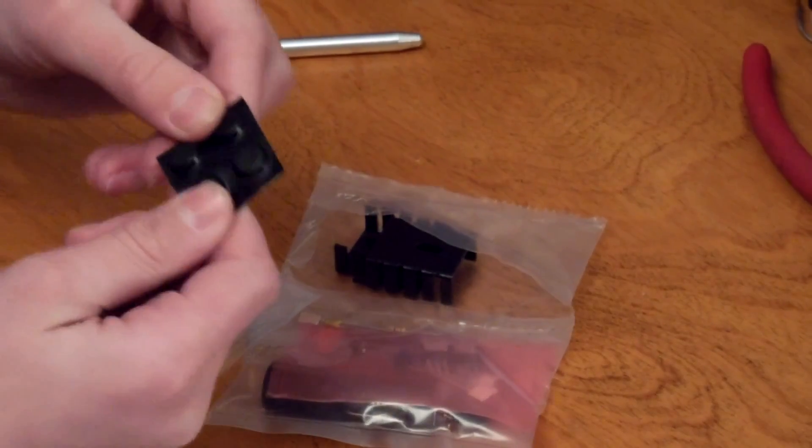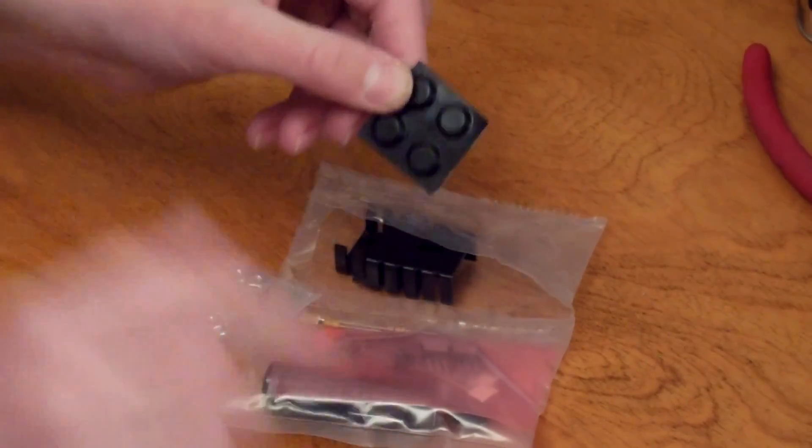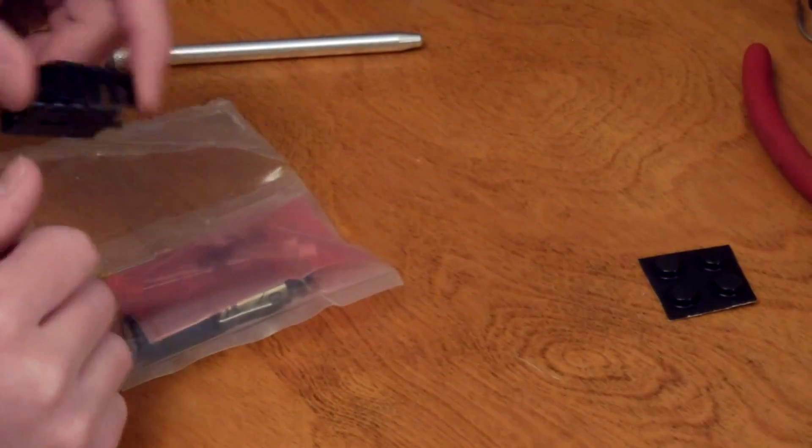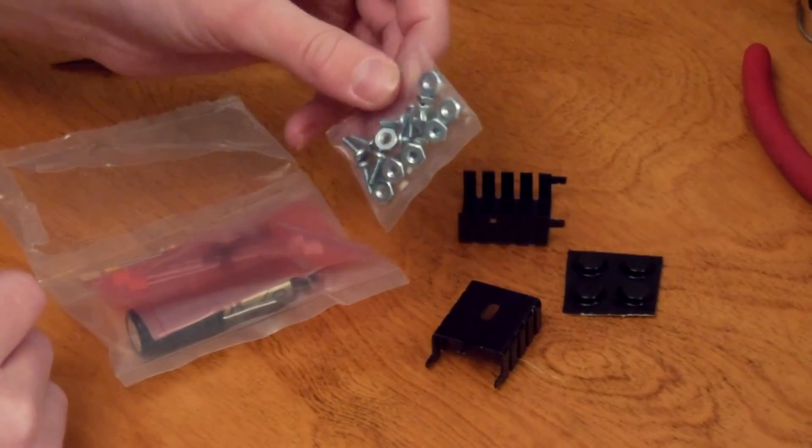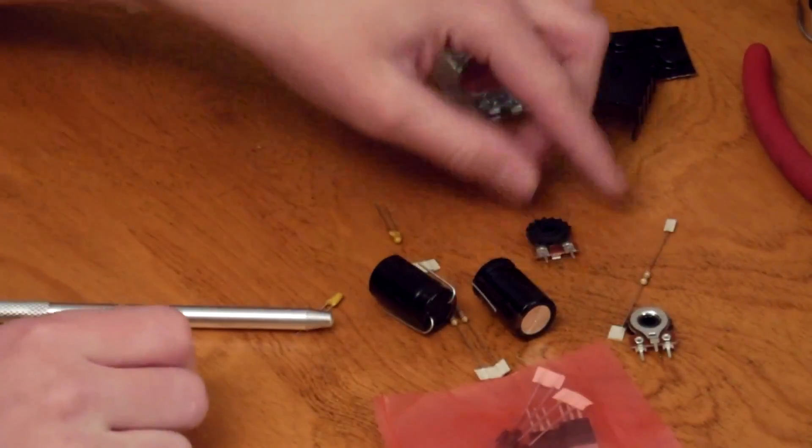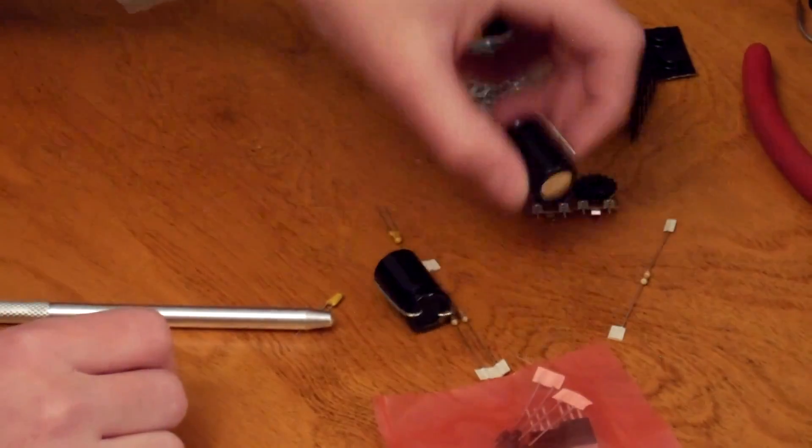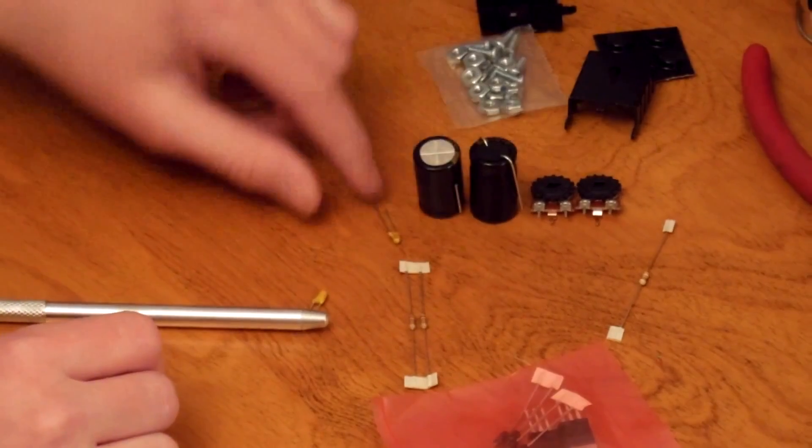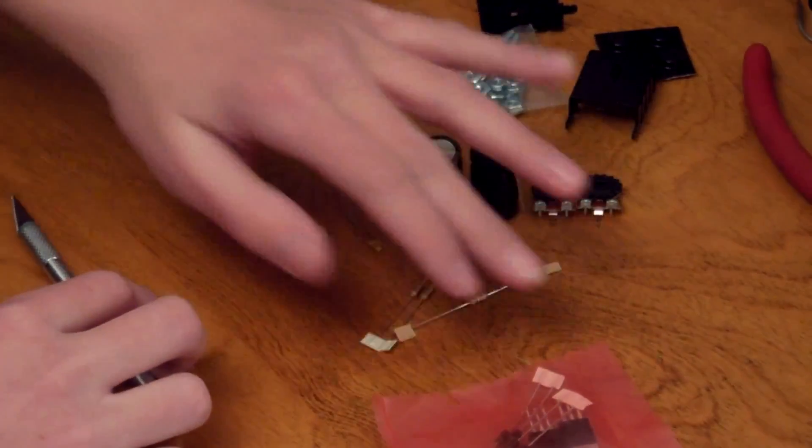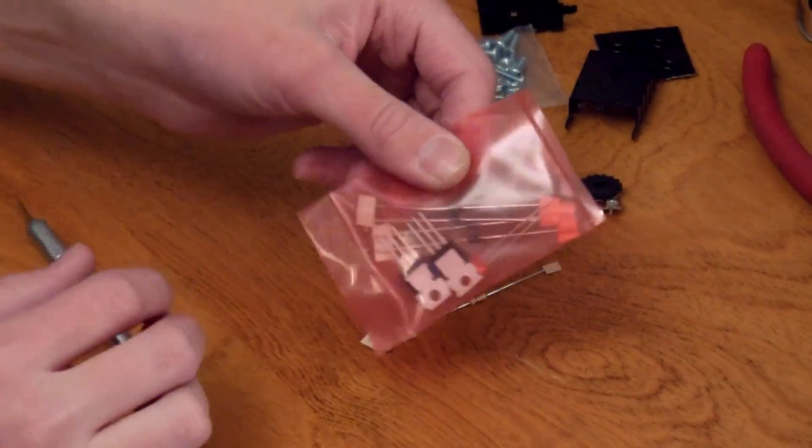We've got some rubber feet here. These will go on the bottom of the PCB to make sure it stays in place when it's set up on your bench. We also have a small bag of hardware for mounting everything on the board. Inside we've got a couple of potentiometers, two large capacitors, two small capacitors, three resistors. And then inside there's also a smaller bag.